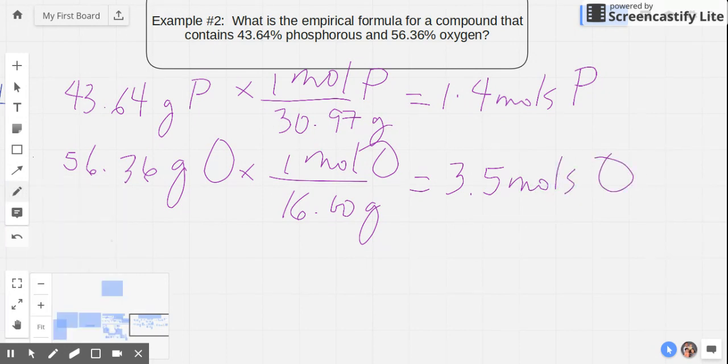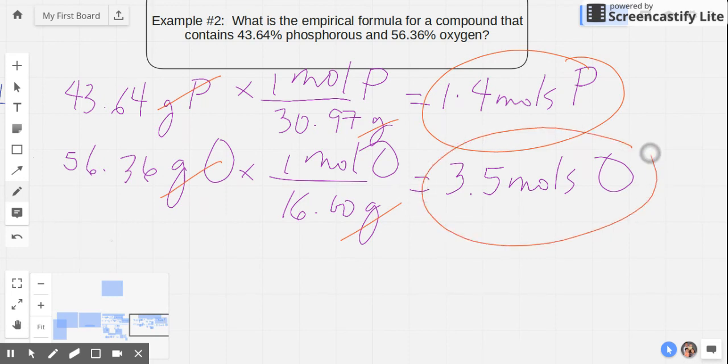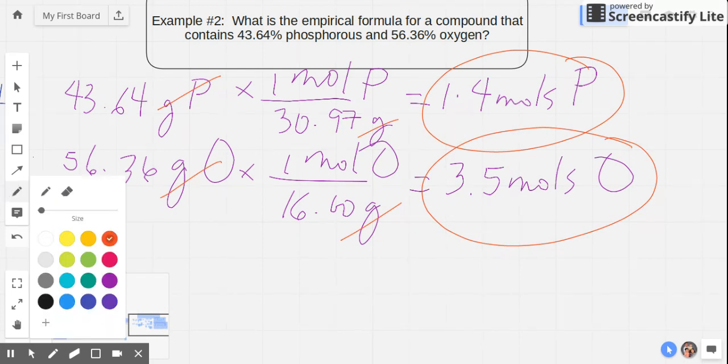So these are our answers. We can cancel out the grams. That's why we generate 1.4 moles of phosphorus and 3.5 moles of oxygen. That's already the new unit. Now let's proceed to the next step.